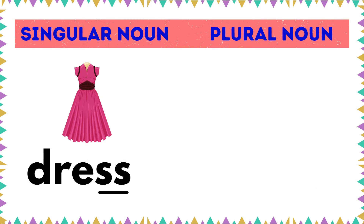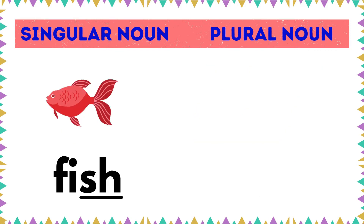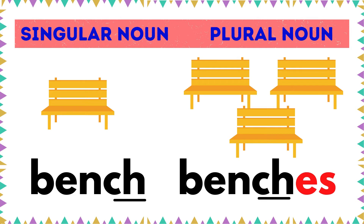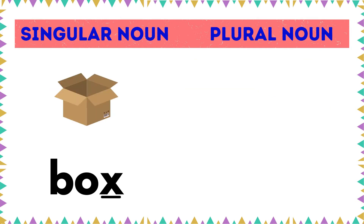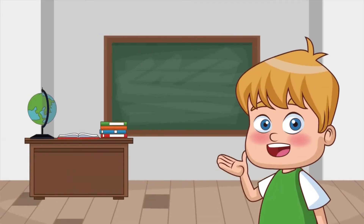Look at this word: dress. It ends in SS. Following the rule, dress becomes dresses. Same goes for these examples. Fish ends in SH — fish becomes fishes. Bench ends in CH — bench becomes benches. Box ends in X — box becomes boxes.